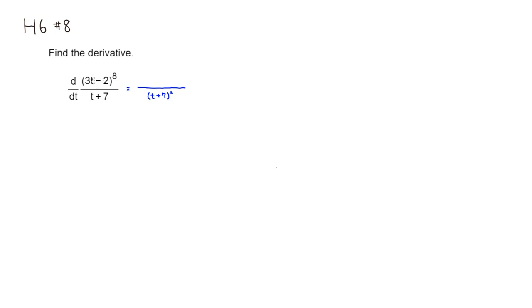All right, then we take the derivative of the top, which is going to be put 8 in front. Keep the inside function as it is, so 3t minus 2, and subtract 1 from the power. So it's 7, just the power rule. Then multiply by derivative of the inside, which is going to be 3.